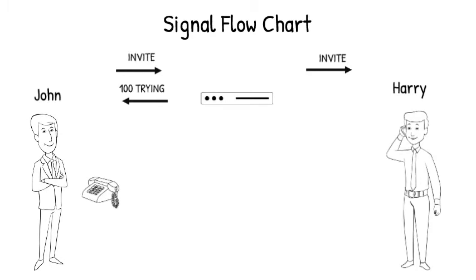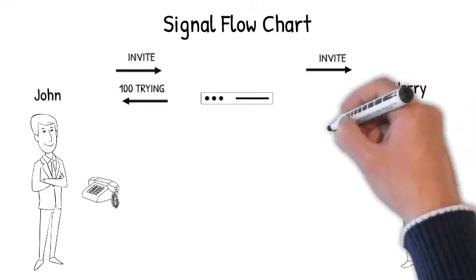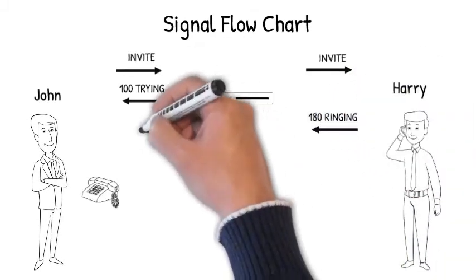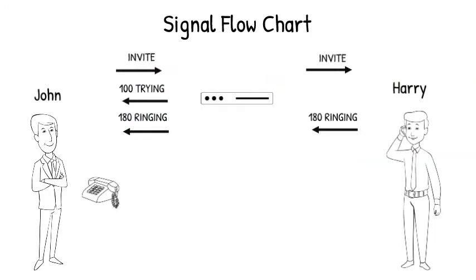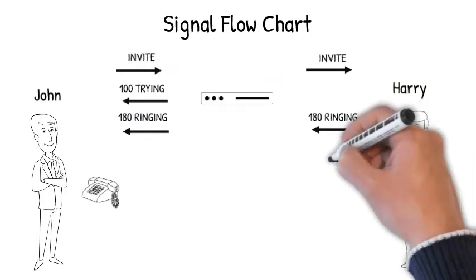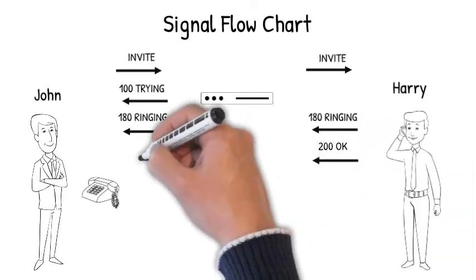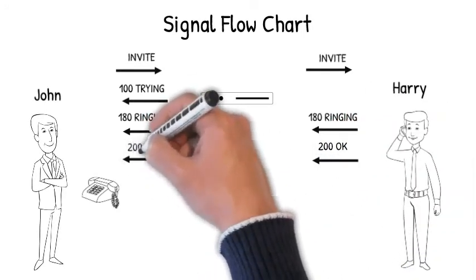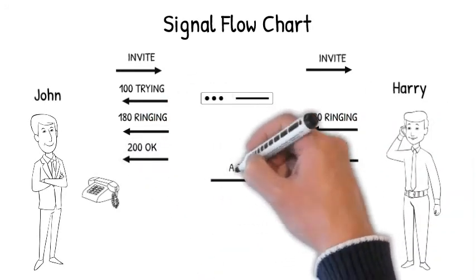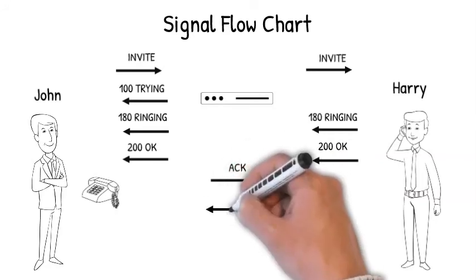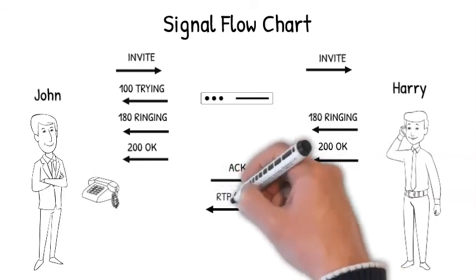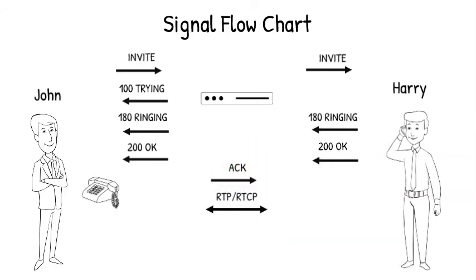Thereafter, 180 Ringing is generated by Harry's phone, which is sent to John's phone via the SIP server. When Harry accepts the call, the phone sends 200 OK to John's device. An acknowledgment is then sent to Harry's device from John's device, the session gets established, and RTP packets start flowing from both ends.